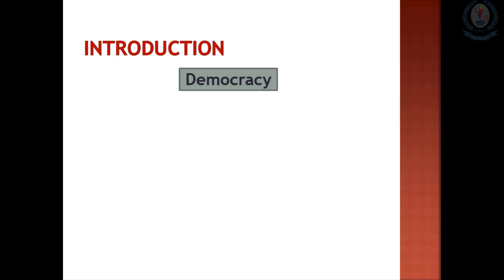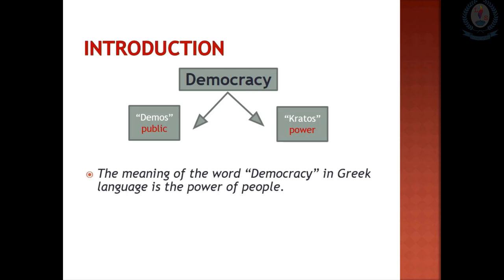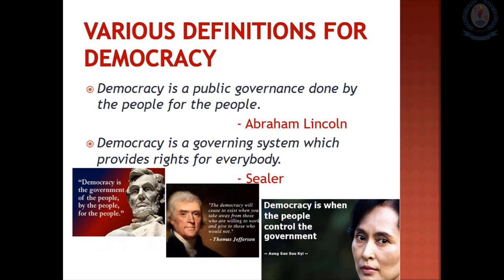We can simply define democracy as a governing system based on public preference. Among the government systems in the world today, democratic governance has been given a prominent place. The English word democracy is formed from two Greek words: demos and kratos. Demos means public and kratos denotes power. So the meaning of the word democracy in Greek is the power of the people. Democracy can be introduced as a system of governance done by the people with the decision of the majority.